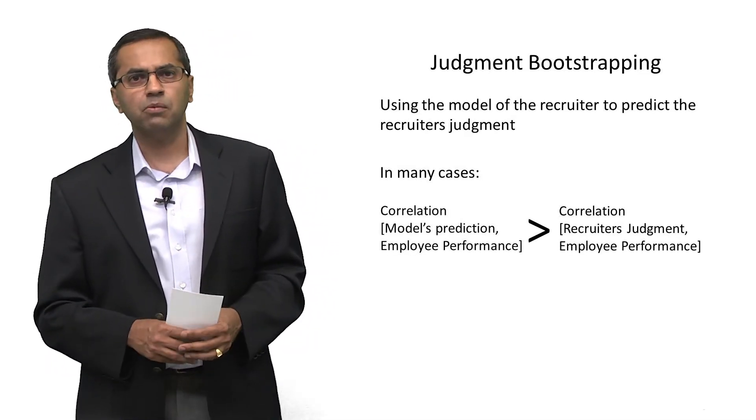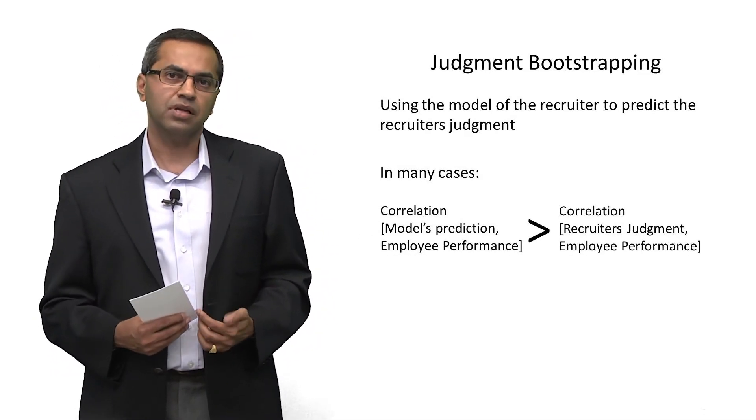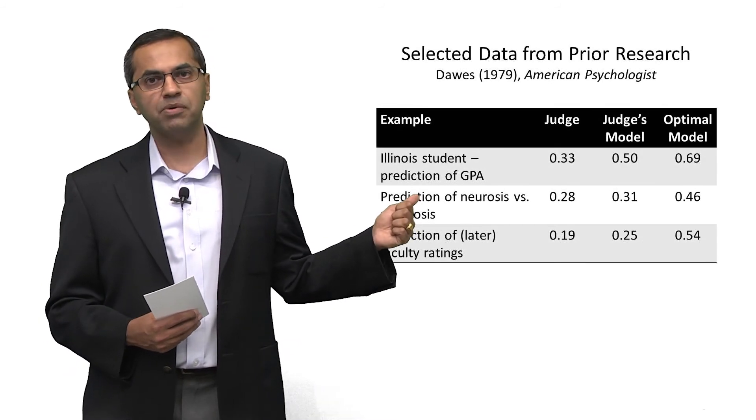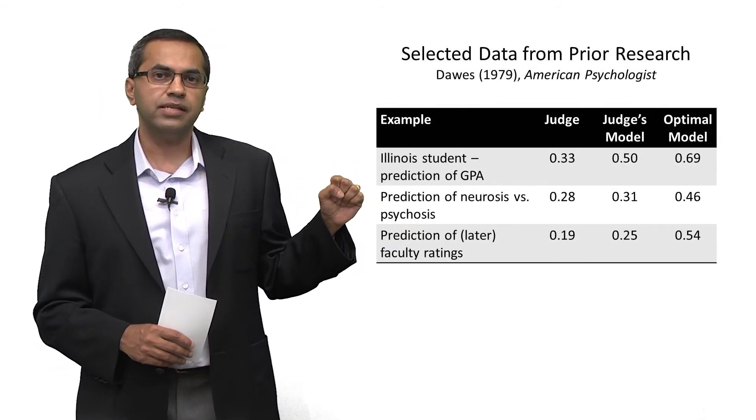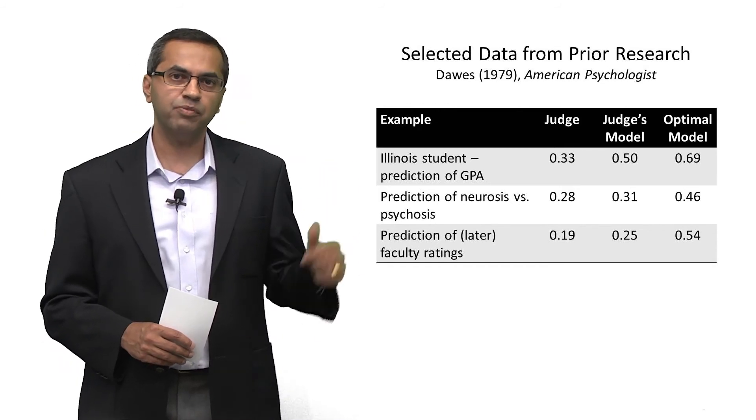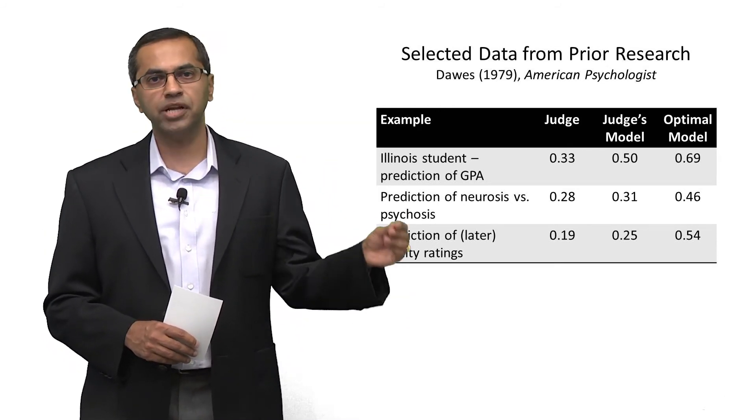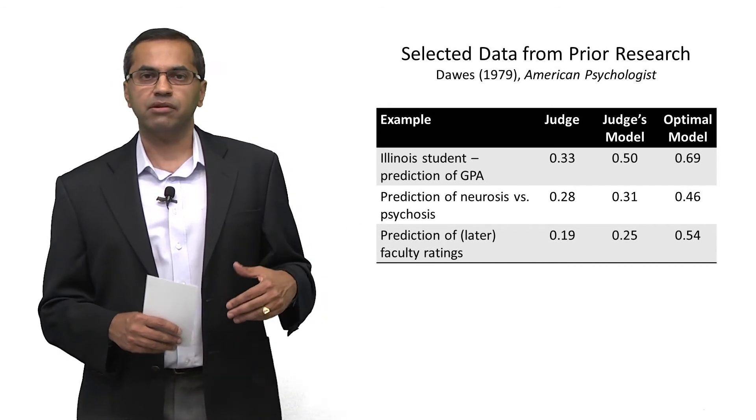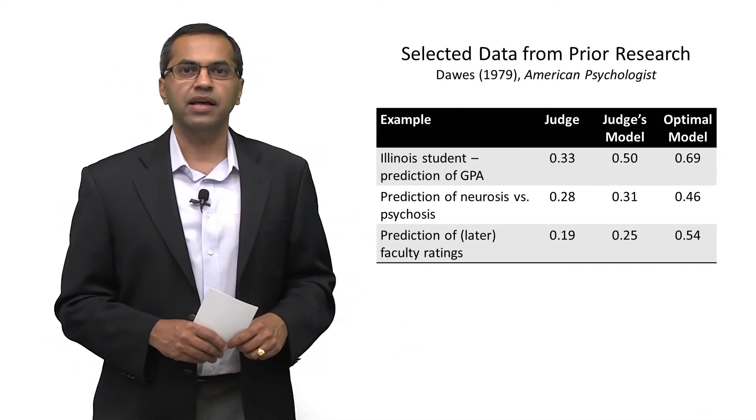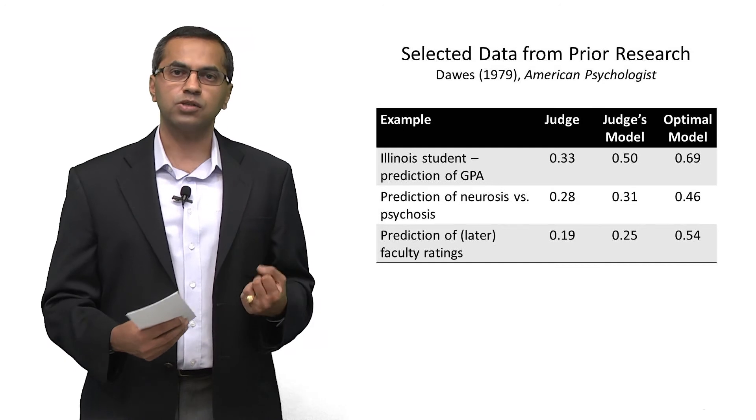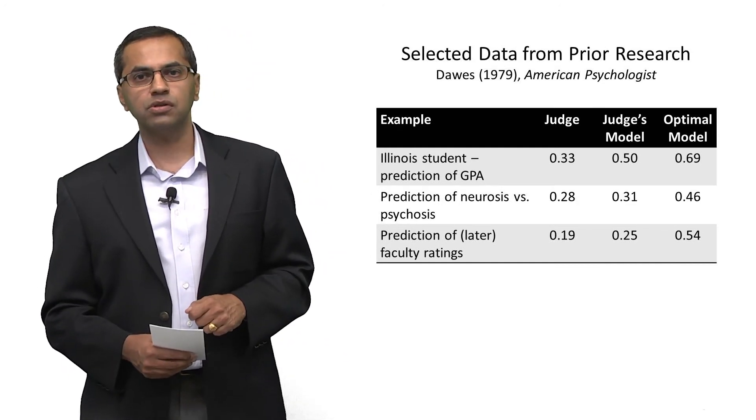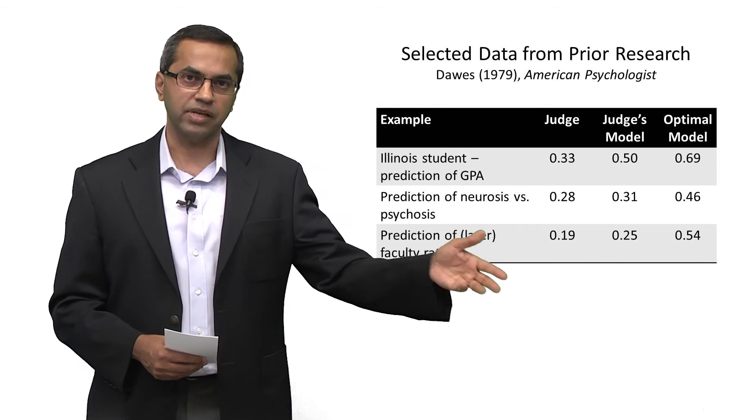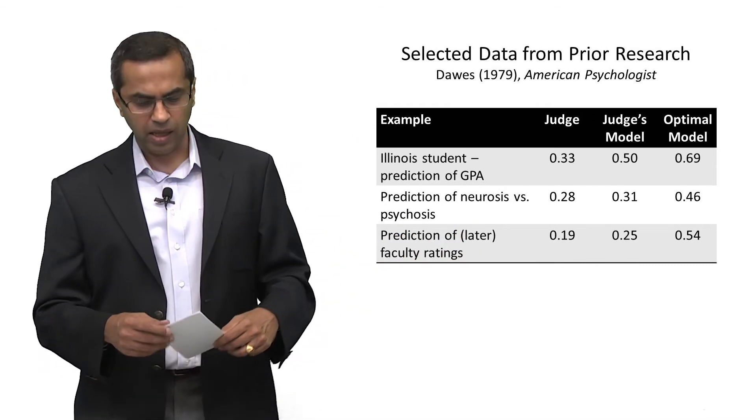Now, if that's the case, what implication does that have for us? Here's some data from a paper by Robin Dawes back in 1979 where he looked at studies that were done by a number of people where experts were asked to make some predictions, some judgments. They ran a model of that expert and then finally they compared the R squared, the correlation of the model's prediction with the truth as well as the manager's or the expert's prediction with the truth. And here's what they found.